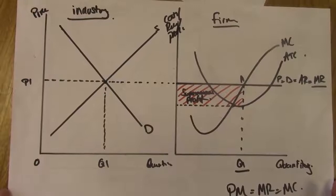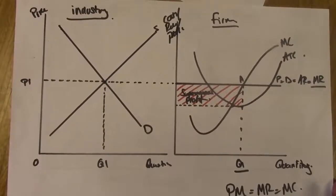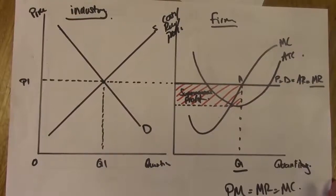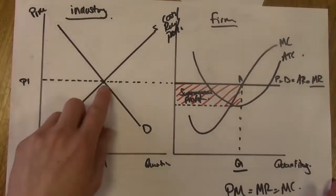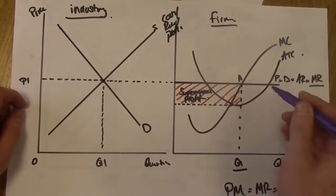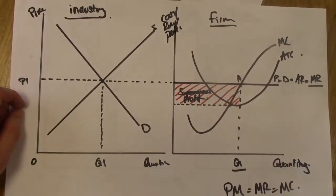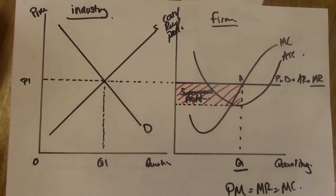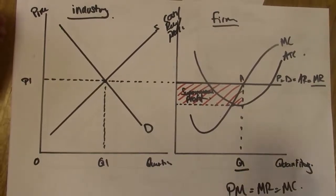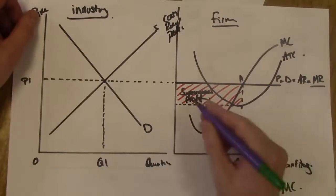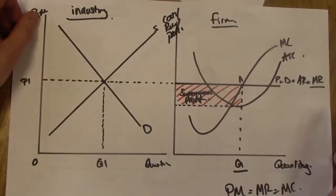In the last video we looked at how price is determined in a perfectly competitive market, using the two-panel analysis with market forces of supply and demand. We also looked at how to show if a firm is making a supernormal profit, and the differences between profit types. One thing to point out is how we can tell straight away, without even shading in the area, that the firm is making a supernormal profit.